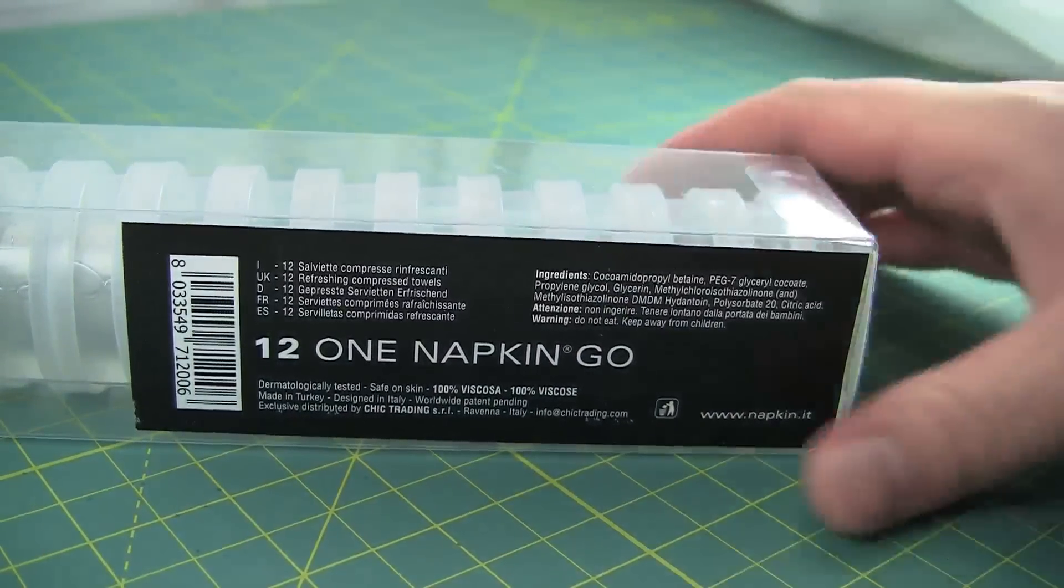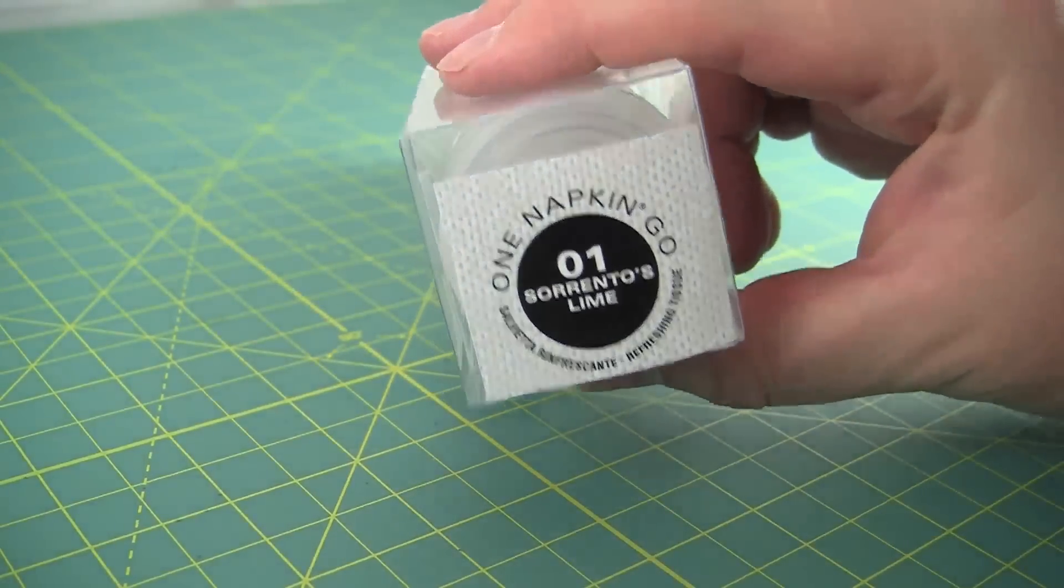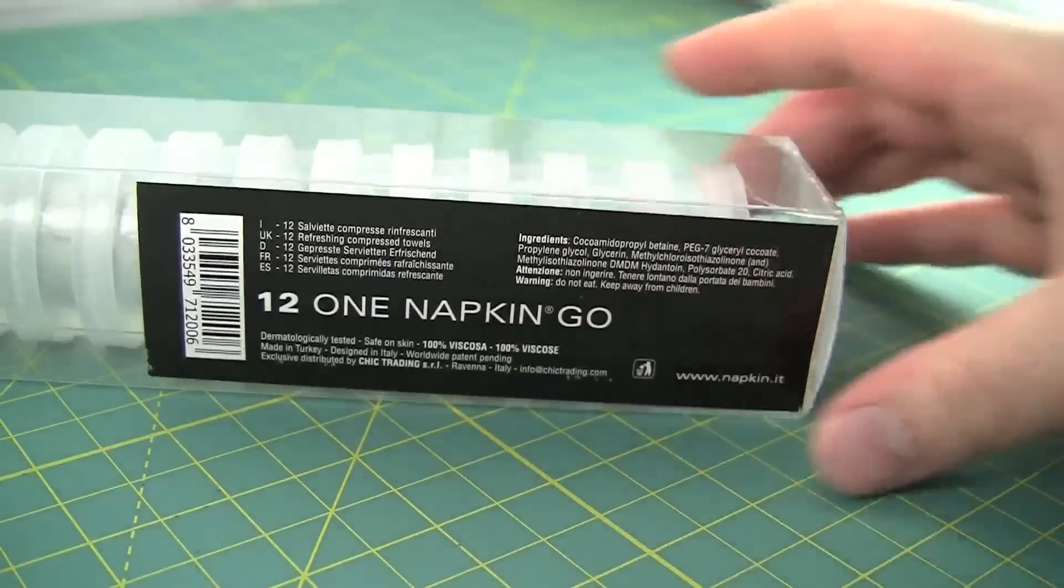Like, you could just get some wet wipes, you know, like Buffalo Wild Wings or something. These ones are lime flavored. I don't know what that means when it comes to napkins.